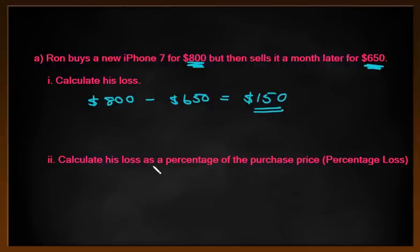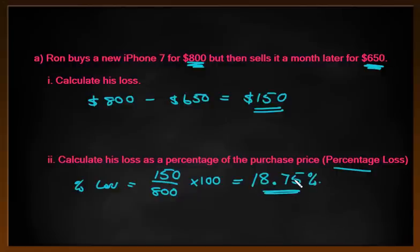Now it says calculate his loss as a percentage of the purchase price. In brackets, I've even put there percentage loss. That means my percentage loss, our loss we know is $150 out of the purchase price or the starting price of $800. In order to turn that into a percentage, we multiply that by 100. So I'm going to check it on the calculator, and we get to two decimal places exactly 18.75%. He loses basically 18.75% of what he paid to start off with. I hope you got that answer.